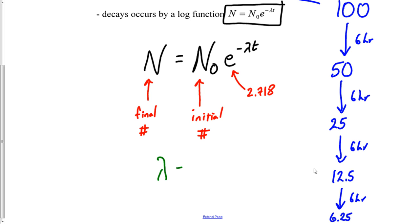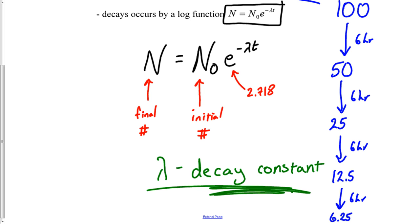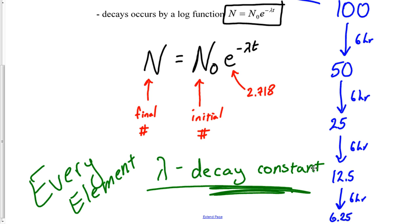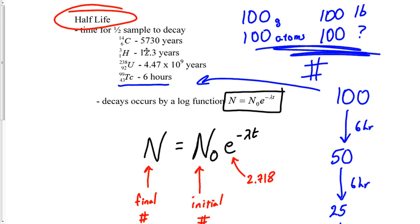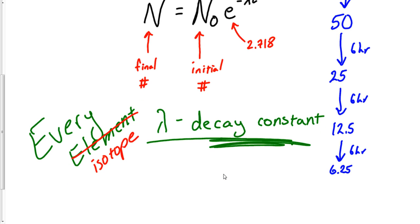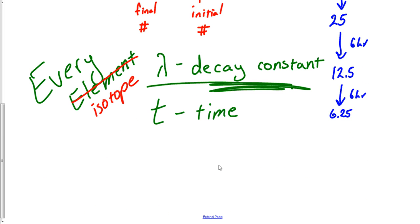The symbol λ (lambda) in this problem is known as the decay constant. Every radioactive isotope has its own decay constant, and we can use half-lives to calculate these decay constants. The variable t is time. The units don't matter — it could be hours, minutes, or years — but whatever units you used for your decay constant, your time must match those same units.